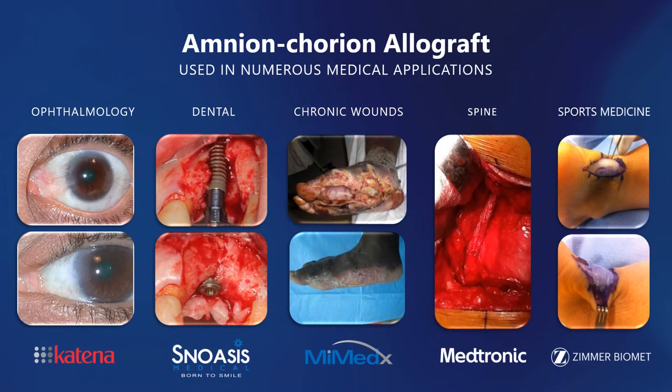Placental allograft membranes are being used in a wide range of wound healing applications. Their unique physical and biological properties make them ideally suited for even the most challenging environments. To better understand why these membranes are having broad success and rapidly increasing clinical adoption, it's useful to examine the underlying biology of these membranes and their primary function during pregnancy.